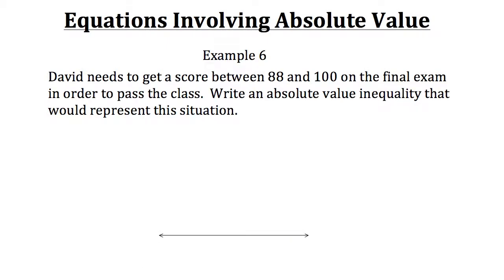Say this is our number line and our origin is right here. Now what if David only needed a score between negative 3 and 3? That means the distance from the origin could be any point in between negative 3 and 3. For example, at 2 there's a distance of 2, and at negative 2 there's also a distance of 2. We don't care what the distance is as long as it's less than 3. An absolute value inequality for this would be: the absolute value of x is less than or equal to 3 to stay within this range.